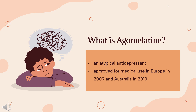Agomelatine, sold under the brand names Valdoxan and Thymanax, among others, is an atypical antidepressant most commonly used to treat major depressive disorder and generalized anxiety disorder. Agomelatine was approved for medical use in Europe in 2009 and Australia in 2010. Its use is not approved in the United States, and efforts to get approval were ended in 2011. It was developed by the pharmaceutical company Servier.